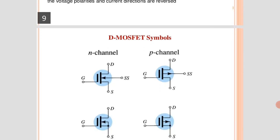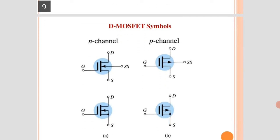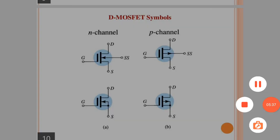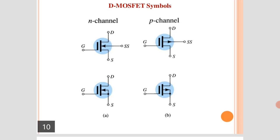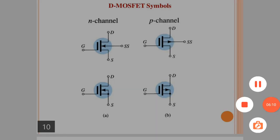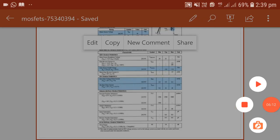The depletion mode MOSFET symbols: there are two types — N-channel and P-channel. The MOSFET has three terminals: drain, gate, and source. In N-channel, the arrowhead direction is on the source. In P-channel, the arrowhead direction is out of the gate. This is the difference. Thank you.